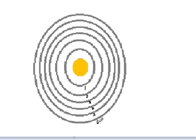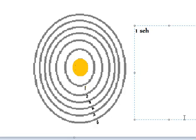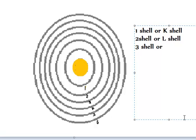This notation is K-L-M-N-O-P, which represents the electron shells K-L-M-N-O-P. So, this is the K-L-M-N-O-P electron shell configuration.